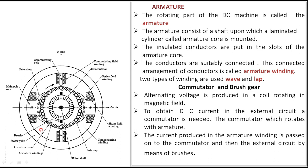The armature is the rotating part. In the case of the DC generator it consists of armature conductors placed in the slots of the outer periphery of the rotor. Both the armature and the stator are made up of laminations to reduce iron losses in the machine. The conductors are put in the slots of the armature core and connected in a particular fashion — either wave winding or lap winding.